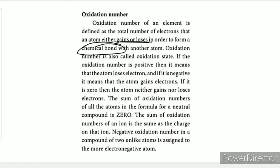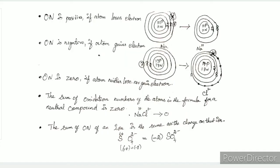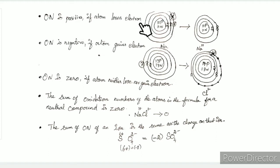The oxidation number is the oxidation state of the atom. If the oxidation number is positive, one atom has lost electrons. For example, sodium is the atom.